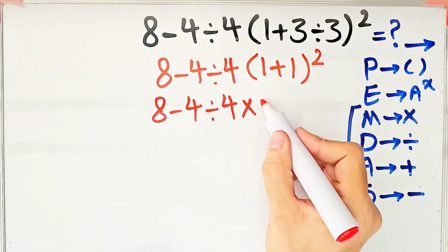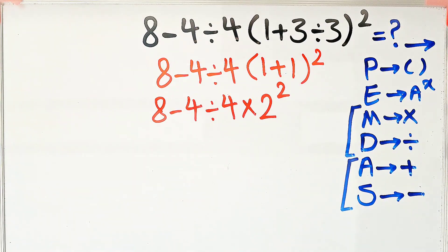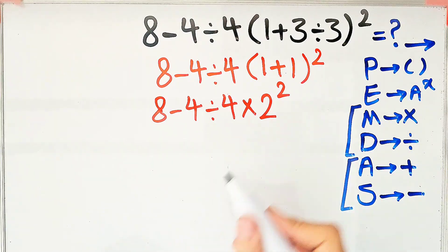In this step we simplify the exponent. 2 to the power of 2 equals 4.